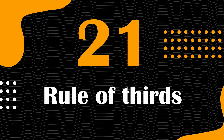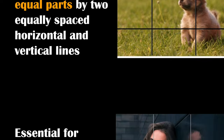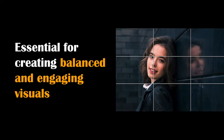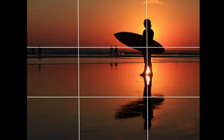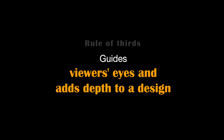The next term is the Rule of Thirds — a fundamental principle in visual composition that divides an image into a grid of nine equal parts by two equally spaced horizontal and vertical lines. By placing key elements or points of interest along these grid lines or at their intersections, designers achieve a pleasing and harmonious composition. For instance, in a landscape photograph, positioning the horizon along one of the horizontal lines and a prominent tree at an intersection point creates a visually appealing and well-balanced image. The rule of thirds is a valuable tool in graphic design, photography and various visual arts.